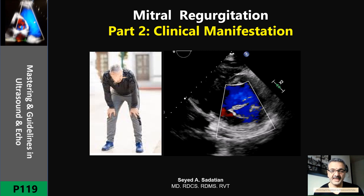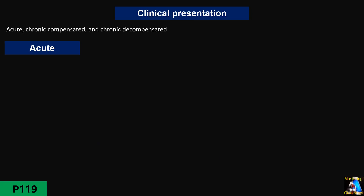Welcome to Mastering and Guideline in Ultrasound and ECHO. From pathophysiology, mitral regurgitation (MR) can be divided into two groups: acute and chronic.